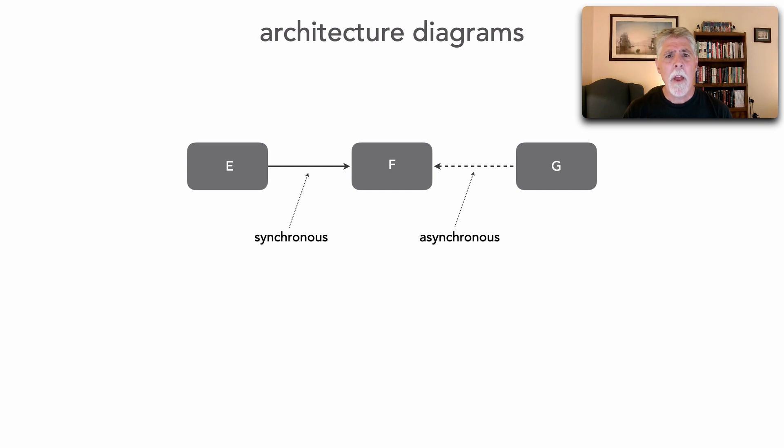For example, you see, let's do the scenario here, where E is requesting data from F, which is indicated by a solid line synchronous. However, G is only simply passing data to F within some sort of workflow, whether it be synchronous or asynchronous.